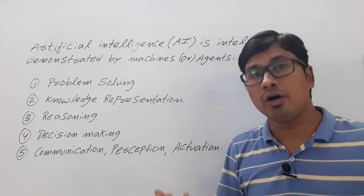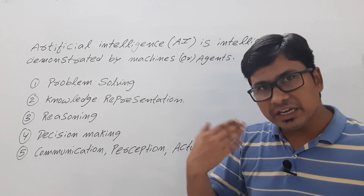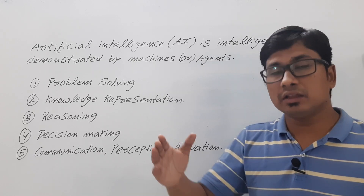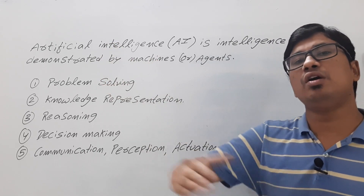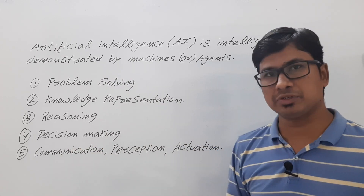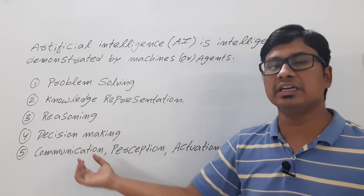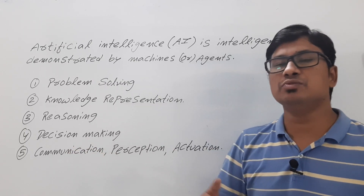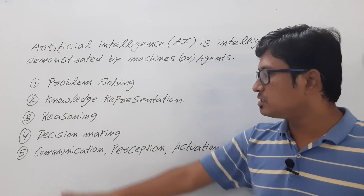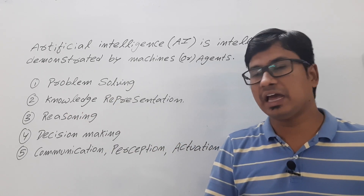However, expert systems do not always work — whenever the rules are very complex, or when we cannot represent the rules, or when there are a very large number of rules, we cannot rely on expert systems. So nowadays we move toward decision making with the help of large amounts of data.